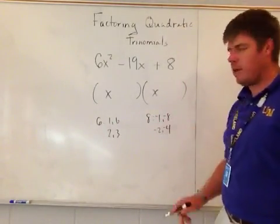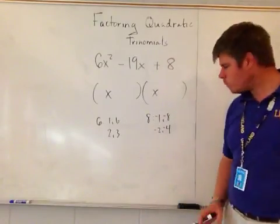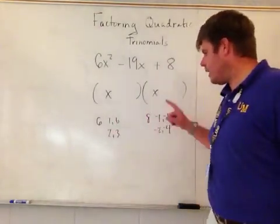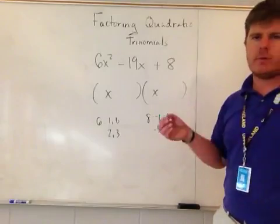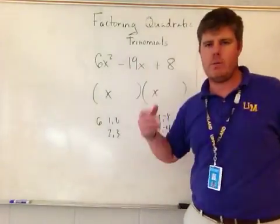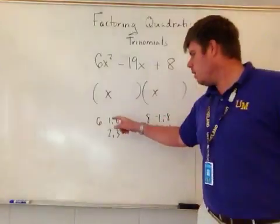So one times negative one is negative one, six times negative eight is negative 48, so negative 48 and negative one do not make negative 19. One times negative two is negative two, six times negative four is negative 24, so negative 24 and negative two does not make